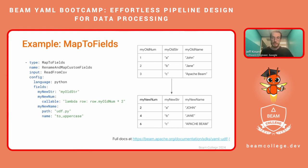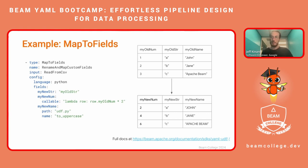In the my new num case, we're using a callable — one way to express your data transformation on the field. In this case, we're giving it some sort of Python callable; this could be a lambda or a full function declaration. Essentially you just want to define what we're actually doing to each row. That callable will take in the full row — in this case my old num, my old string, my old name — and we're taking my old num and multiplying it by two. You'll notice each value got multiplied by two. Finally we have my new name, which takes advantage of using a UDF file. You provide a file and a name of a function within that file, which will operate on each row similar to callable. In this case, we have a function to uppercase, which will uppercase each of the values. Full docs are at the linked URL.